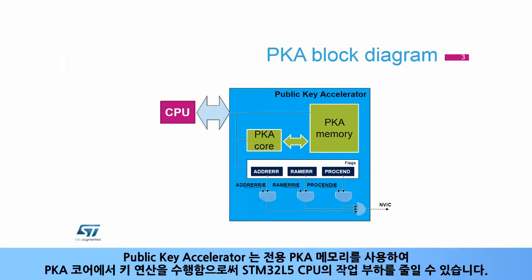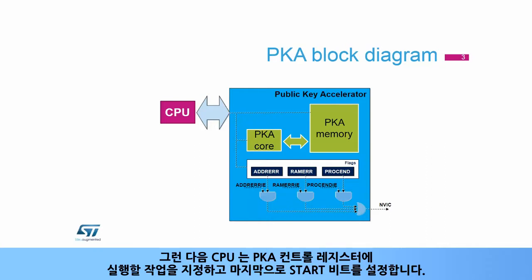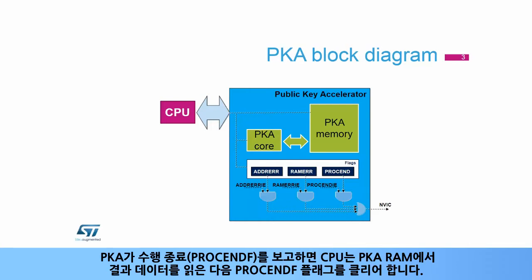The public key accelerator lightens the CPU's workload by performing key operations in the PKA core using dedicated PKA memory. The CPU loads initial data into the PKA internal RAM, located at address offset 0x400. Then in the PKA control register, the CPU specifies the operation to be executed and asserts the start bit. Once the PKA reports the end of operation (PROCENDF flag), the CPU reads the resulting data from the PKA RAM, then clears the PROCENDF flag.